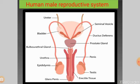The secretion of the bulbo-urethral gland, or Cowper's gland, is alkaline and rich in mucus. It is meant for lubrication. So, to summarize: the seminal vesicle provides nourishment, the prostate gland provides motility, and the bulbo-urethral gland provides lubrication to the sperm.